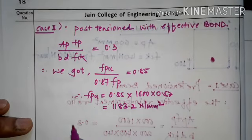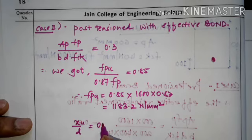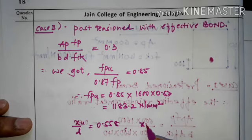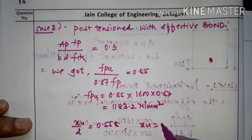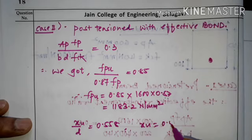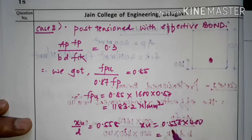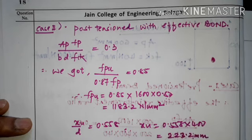Also, XU/D = 0.558, so XU = 0.558 × 400 = 223.2 mm.